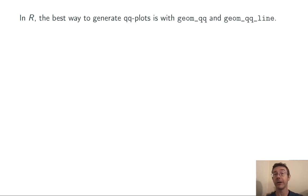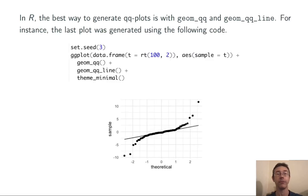In R, the best way to generate QQ plots is with the geom_qq and geom_qq_line commands and the ggplot function. For instance, the plot that we just saw in that last example was generated with this code. In my next vid, I'll get into some more of the details for how to generate these for different distributions and under different circumstances.